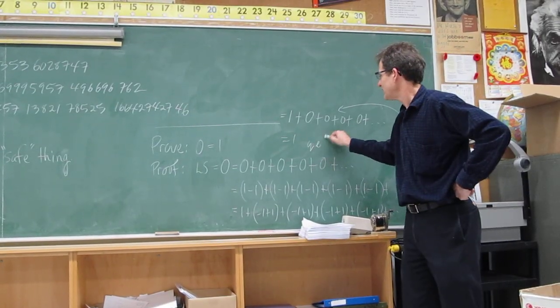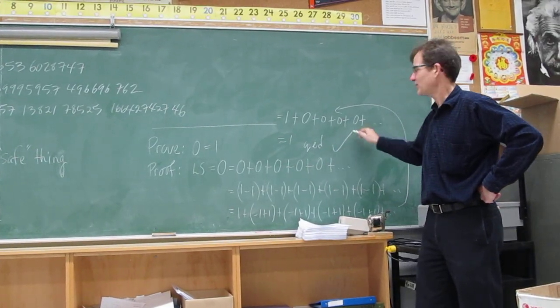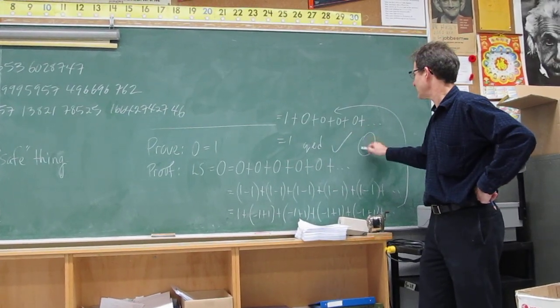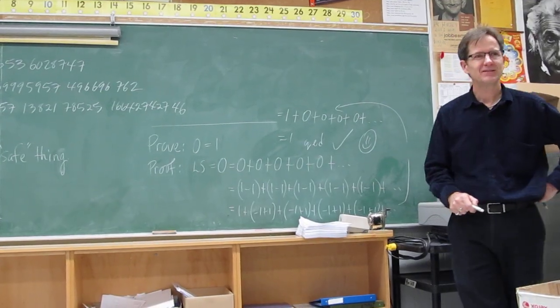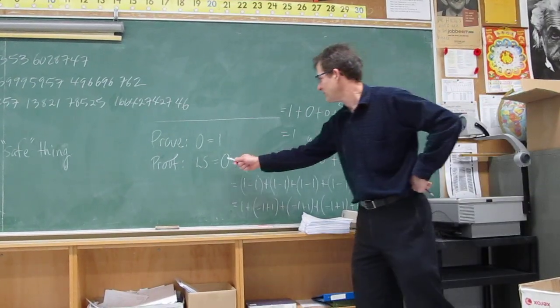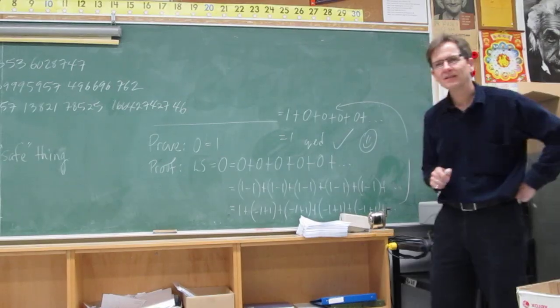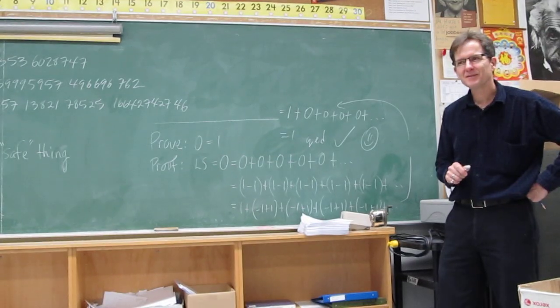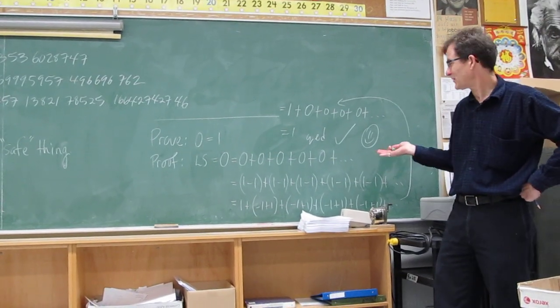And we know that adds up to 1. So that's equal to 1. QED — big fat checkmark, or better yet, smiley face. Now you know that 0 equals 1. It's got to be — I just proved it.